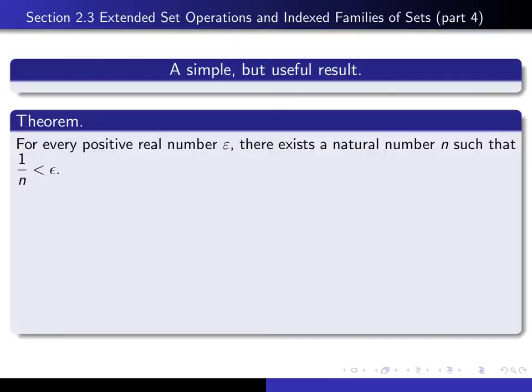So here's the result that we're going to prove. It says that for every positive real number epsilon, there exists a natural number n such that 1 over n is smaller than epsilon.